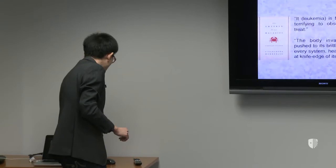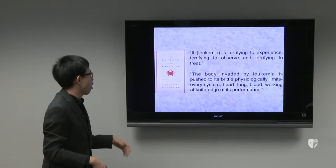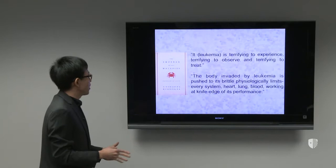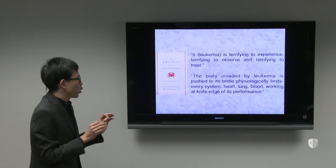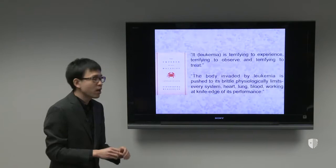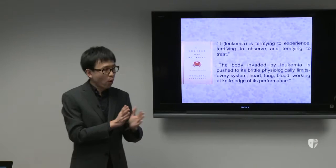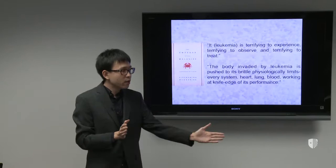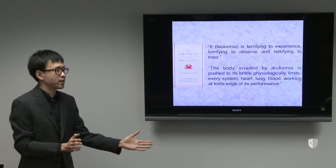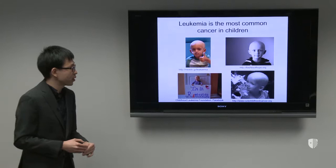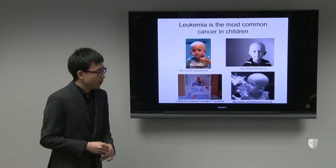From a physician's perspective — and I'm taking a quote from The Emperor of All Maladies — leukemia is terrifying to experience and terrifying to observe and terrifying to treat. The body invaded by leukemia is pushed to its physiological limit — every system, heart, lung, blood, working at the knife edge of its performance. When people are diagnosed with this specific leukemia we are working on, the disease progresses so fast that if you don't treat it, it might crash your system within days. And leukemia is very common in childhood cancers — one third of children's cancers is pediatric leukemia. But compared to adult leukemia, the current therapy actually works a lot better in children.